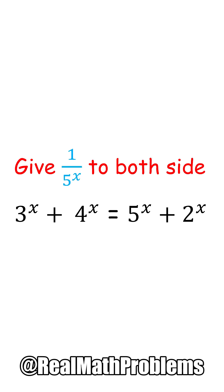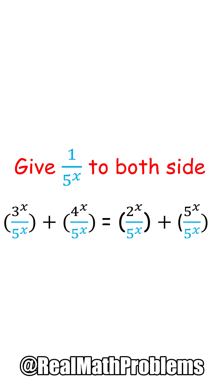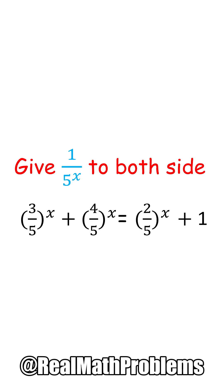So to prove it, let's give 1 over 5 to the power of x for both sides. We will have a simplification for 5 to the power of x, and it will just be equal to 1.